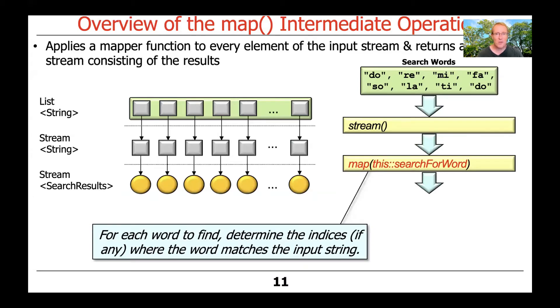The way we use this particular intermediate operation in the context of our simple search stream program is to use a behavior, a method reference called searchForWord that's passed to the map intermediate operation. The idea here is that for every word in the stream, we're going to call the searchForWord method reference, and then have that determine whether or not there's a match.